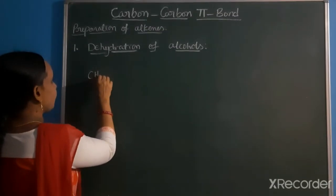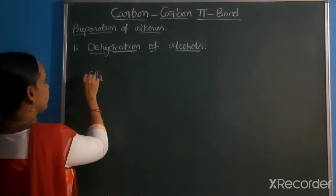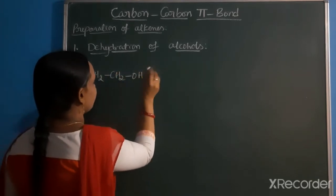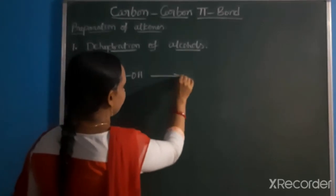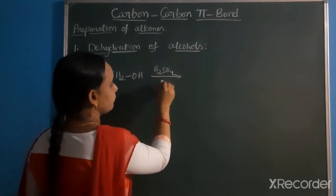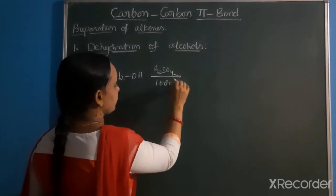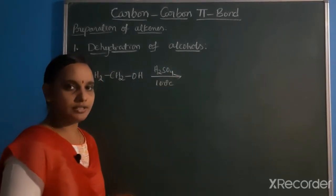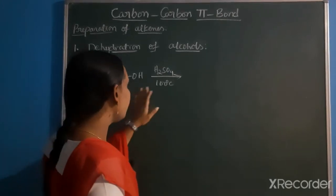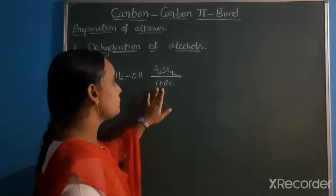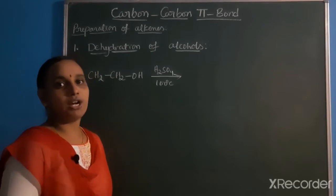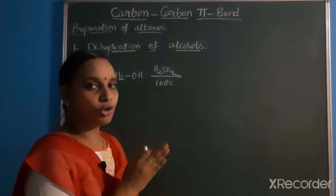CH2CH2OH - alcohols are prepared to give alkenes in the presence of high temperature. H2SO4 is used at 100 degrees centigrade and phosphoric acid at 200 degrees centigrade. Water is removed in this process.